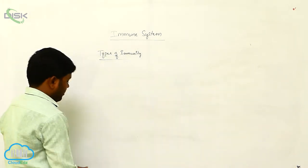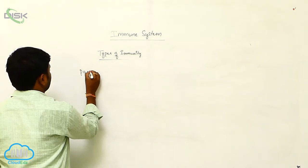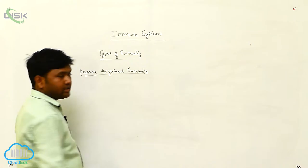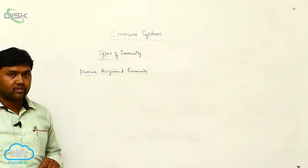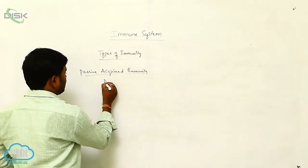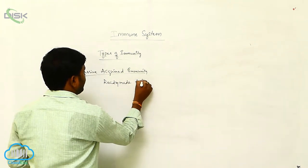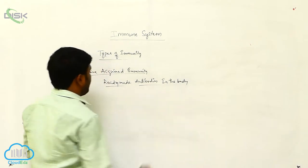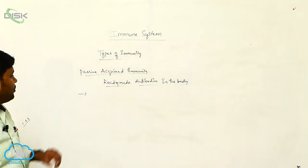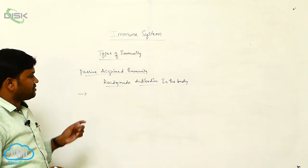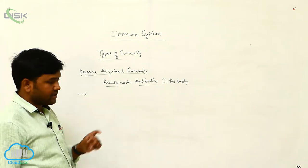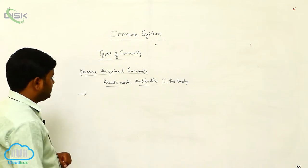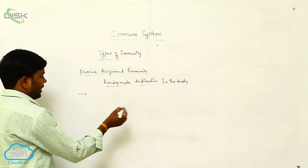Passive acquired immunity — in this, the defense or resistance of any individual is developed by ready-made antibodies in the body. The defense or resistance of any individual is obtained by prepared or ready-made antibodies. Passive acquired immunity is again split into two types.